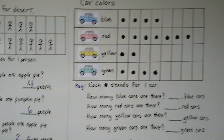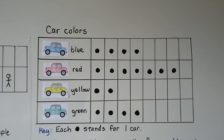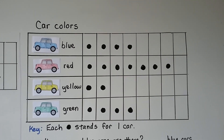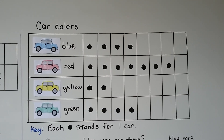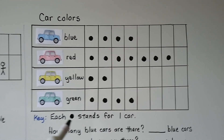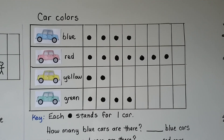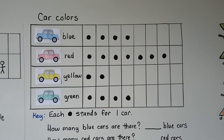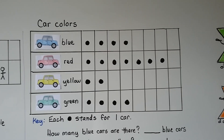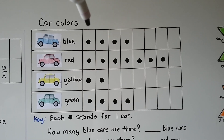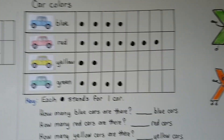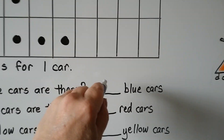Now look at this picture graph. It's comparing four different car colors — blue, red, yellow, and green. The key tells us that each black dot stands for one car. So how many blue cars are there? Look at the picture graph and count the black dots: one, two, three, four. There are four blue cars.